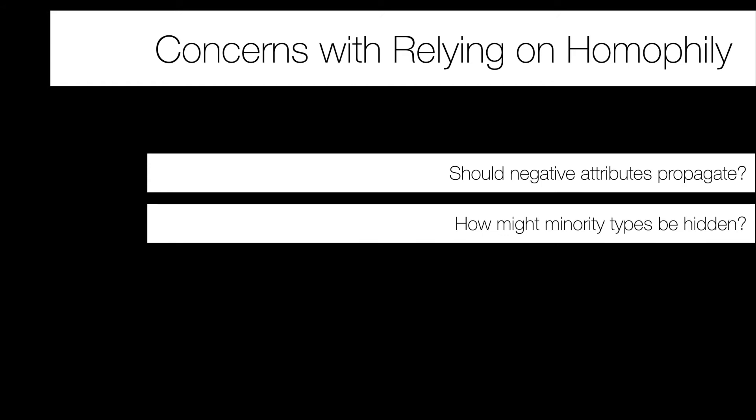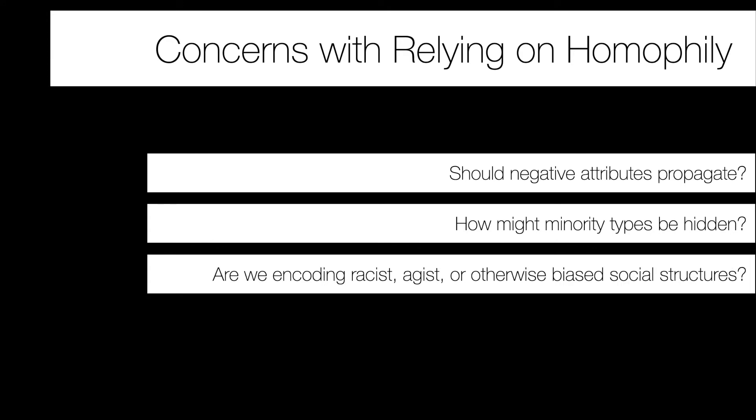There are also majority-minority biases. In the US, large groups of white individuals on social networks mean the primary drivers of community structure reflect majority information, potentially drowning out minority information. Furthermore, relying on homophily means the social structures embedded in society — which we know are biased — are informing our models. Are we encoding racist, ageist, or otherwise unjust mechanics into our networks? These are important considerations.